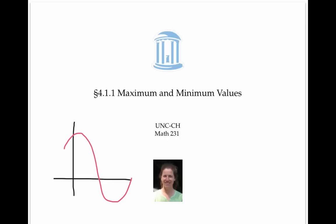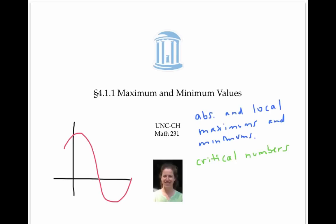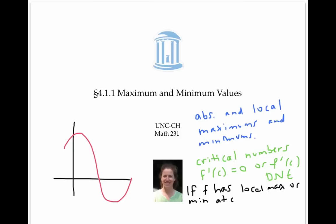In this video, we defined absolute and local maximum and minimums. We also defined critical numbers, which are numbers c where f prime of c equals zero or f prime of c does not exist. We noted that if f has a local max or min at c, then c is a critical number — but not necessarily vice versa.